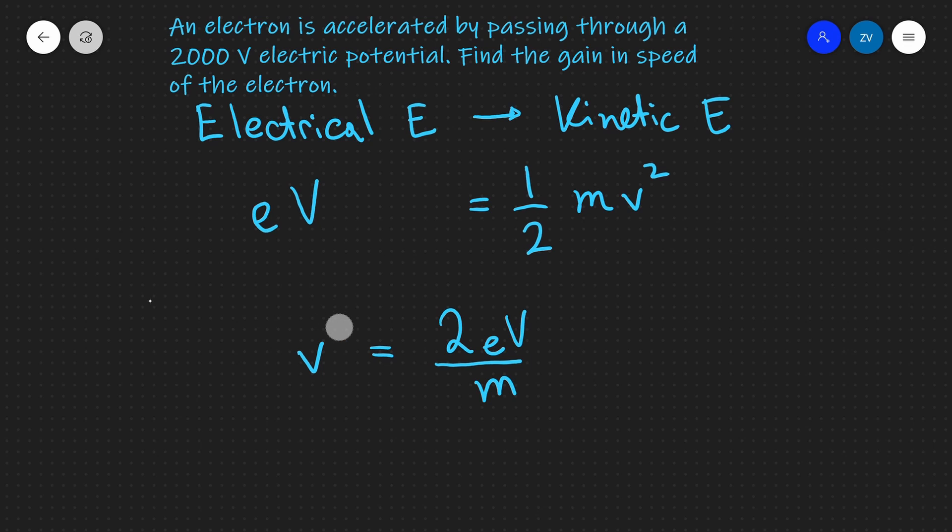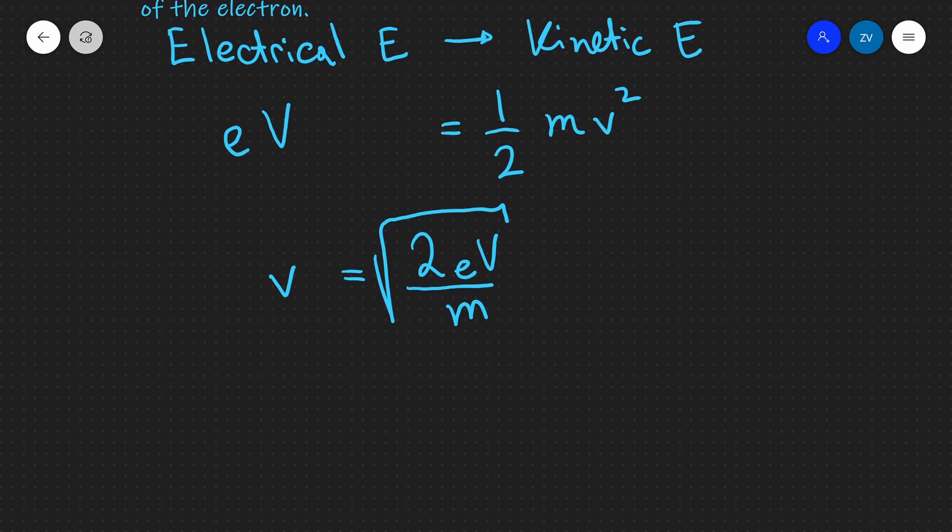Finally I just want to square root both sides which is going to give me an expression for the speed being equal to the square root of 2eV divided by m, where e is the charge of an electron and m is the mass of an electron.